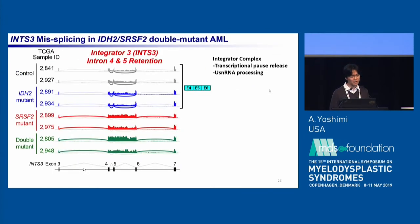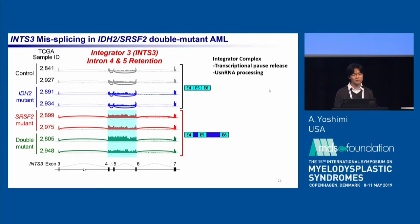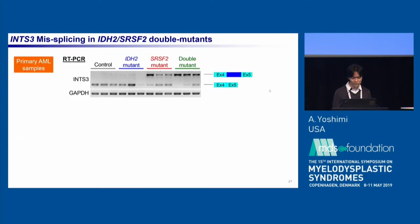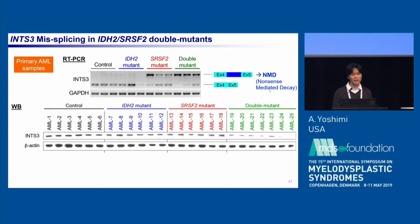We then focused on the missplicing event in INT3, the Integrator subunit 3 gene, because this missplicing event in SRSF2 mutant or double mutant AML was one of the most robust changes. Integrator 3 is a component of the Integrator complex, which is involved in transcriptional pause-release and snRNA processing. We confirmed the missplicing event using RT-PCR of primary AML patient samples, and this aberrant transcript was expected to be a target of nonsense-mediated decay. We also evaluated the protein expression level of INT3 in AML patient samples, and the double mutant AML showed a profound decrease in INT3 protein expression level.